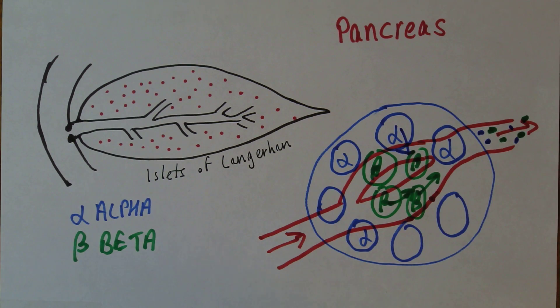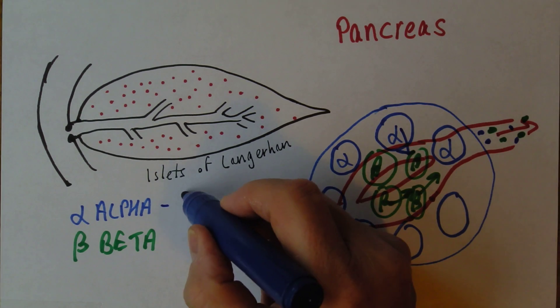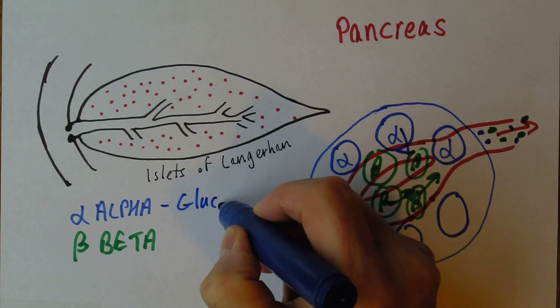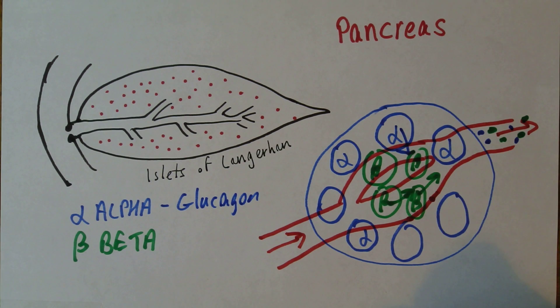And the alpha cells, you probably know, produce glucagon. They produce glucagon. And the beta cells famously produce insulin.